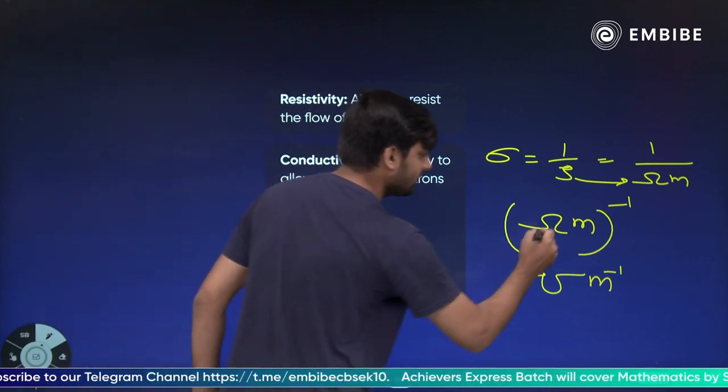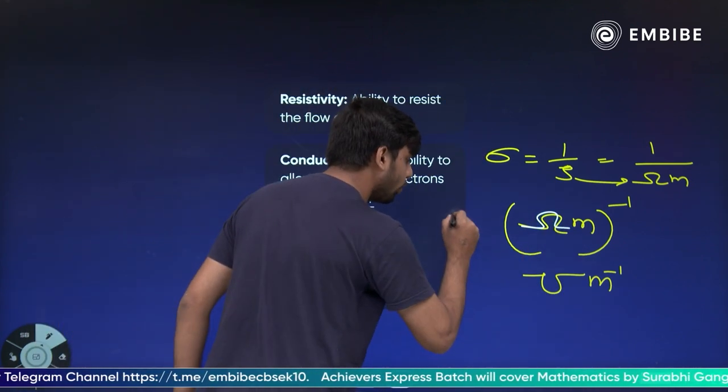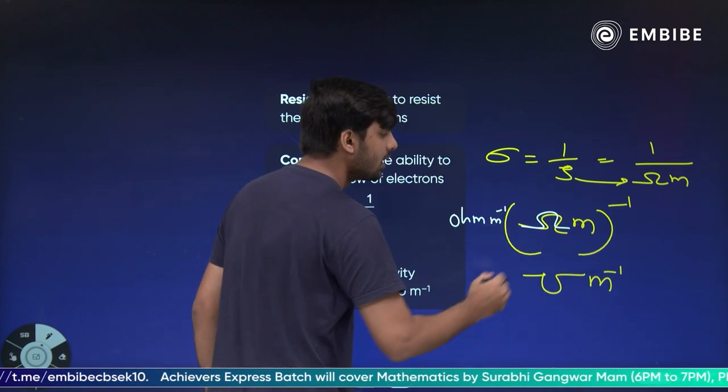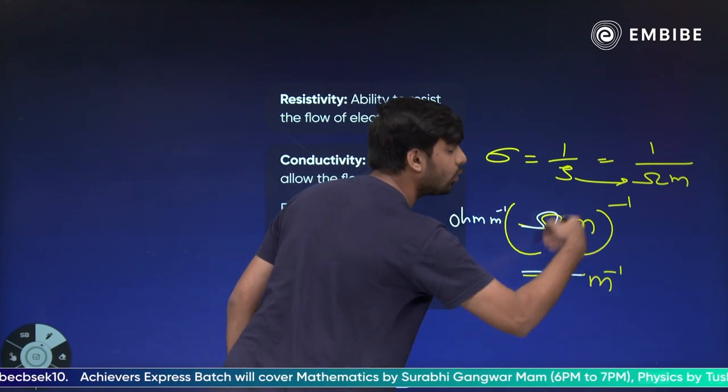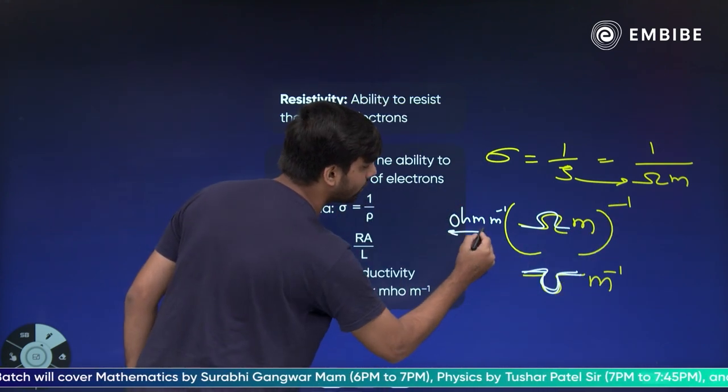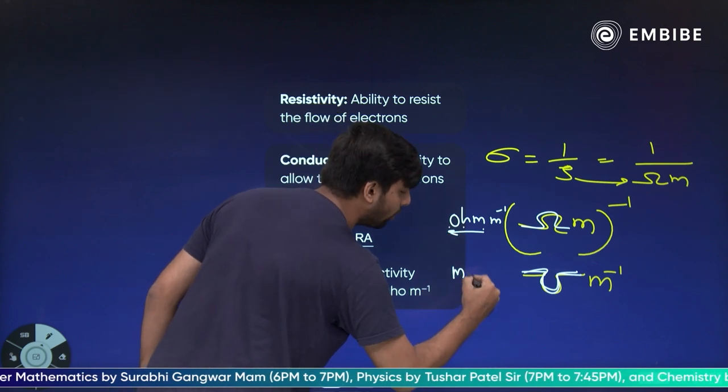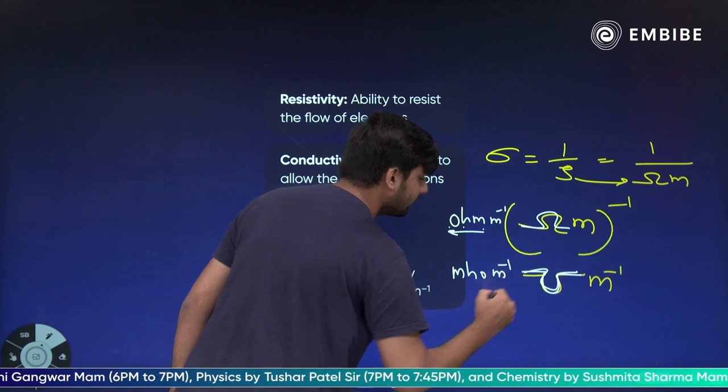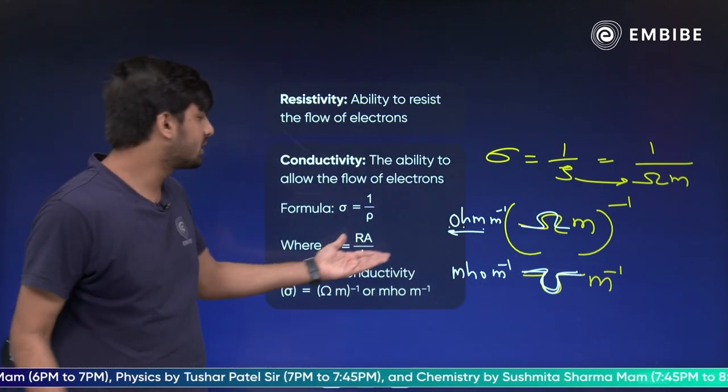Yeh symbol ka hum kya bulate hai, ohm bulate hai. Yeh to meter inverse hai hi. To is symbol, kyunki ohm ka ulta hai, meter ohm inverse hai. Yeh ohm ka ulta hai to ohm ko aise read karo mho. Isko bula diya mho.